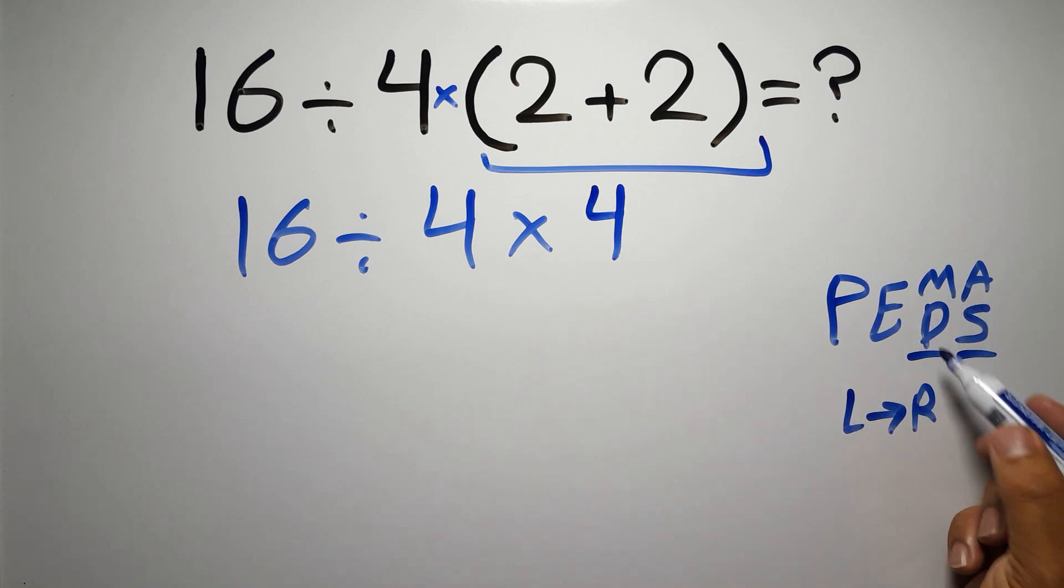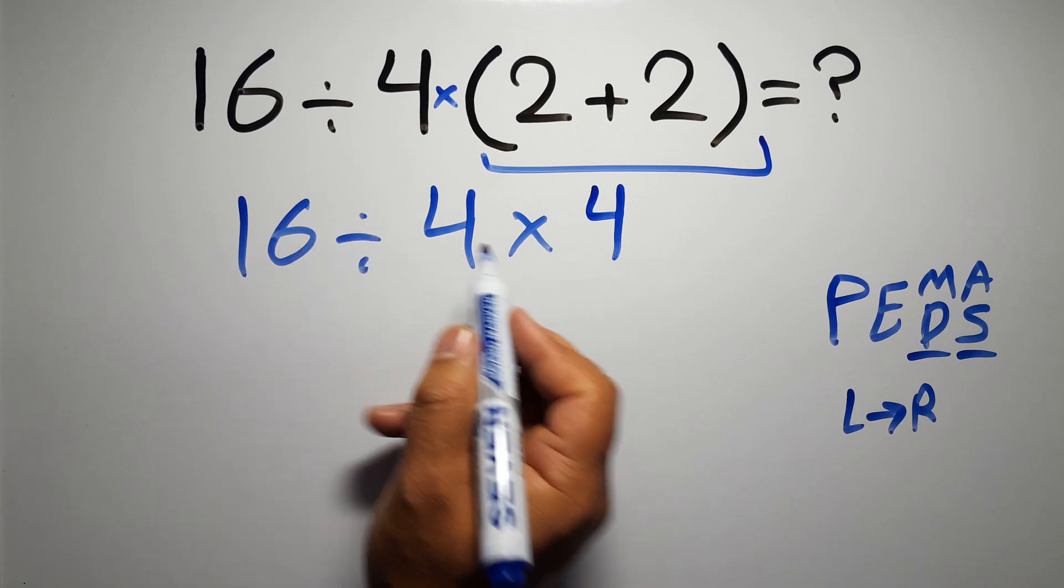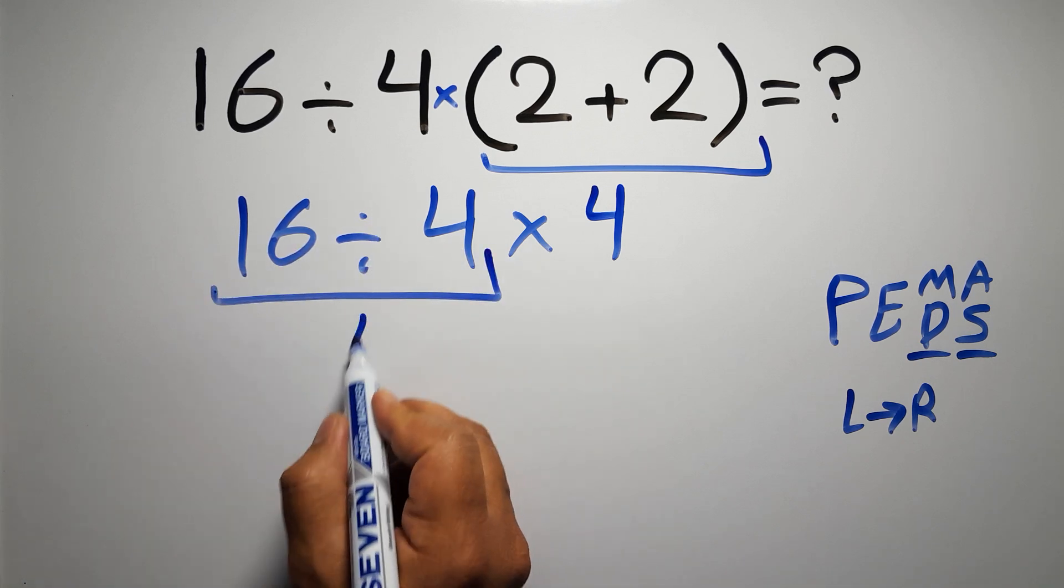As I said, multiplication and division have equal priority, and we have to work from left to right. So here, first we have to do this division. 16 divided by 4 gives us 4.